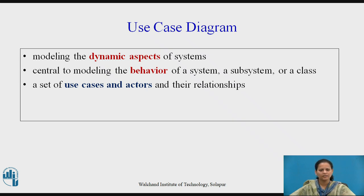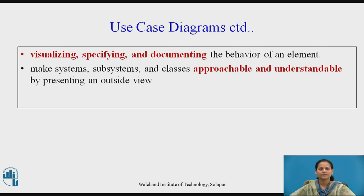Use case diagrams are important for visualizing, specifying and documenting the behavior of an element. They make systems, subsystems and classes approachable and understandable by presenting an outside view of how those elements may be used in context. With the UML, you apply use case diagrams to visualize the behavior of a system, subsystem or class so that users can comprehend how to use that element and developers can implement it.